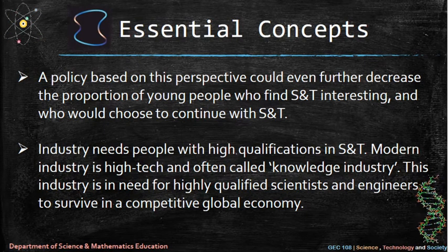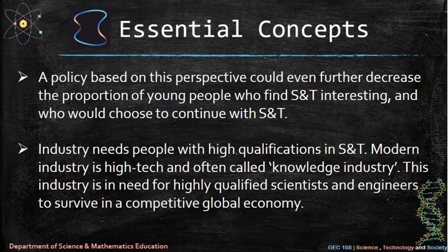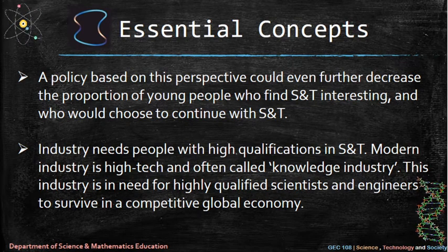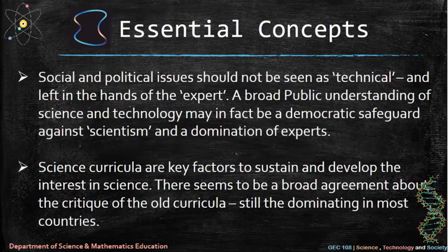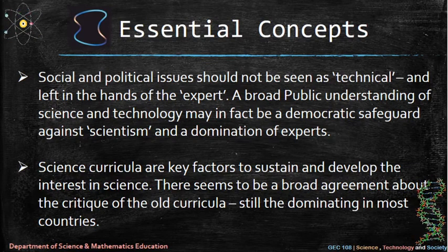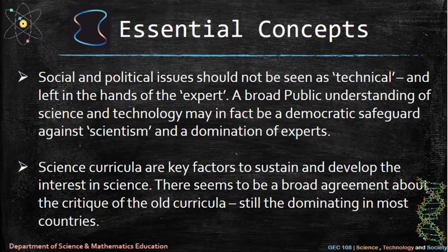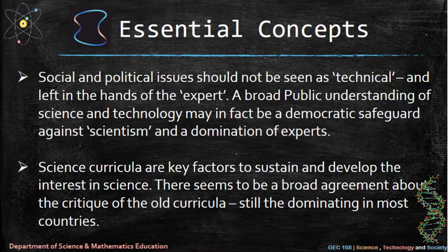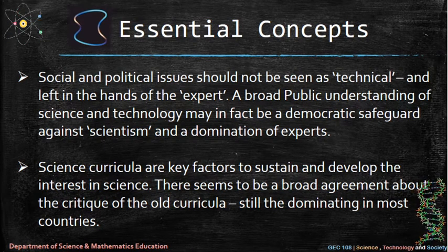Six: industry needs people with high qualifications in science and technology. Modern industry is high-tech and often called the knowledge industry, which needs highly qualified scientists and engineers to survive in a competitive global economy. Seven: social and political issues should not be seen as purely technical and left in the hands of experts. A broad public understanding of science and technology may be a democratic safeguard against scientism. Eight: science curricula are key factors to sustain and develop interest in science, though the old curricula still dominating most countries have been broadly criticized.